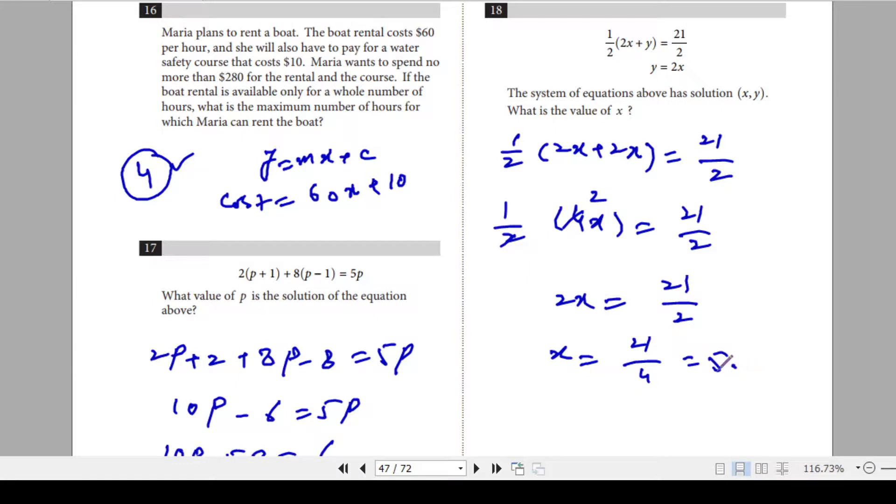Or you can write 5.25. The same. So your call. Both answers are valid, 21 over 4 or 5.25.